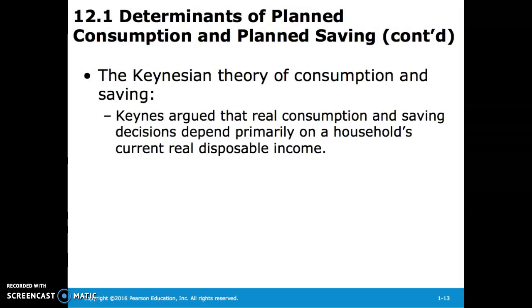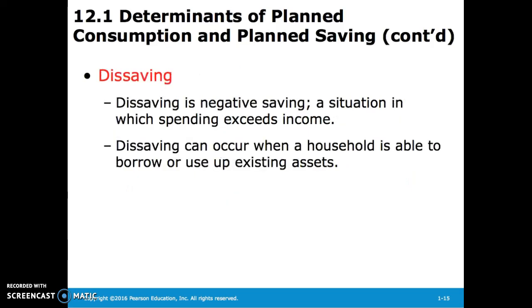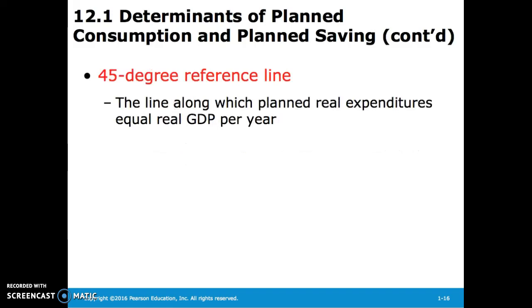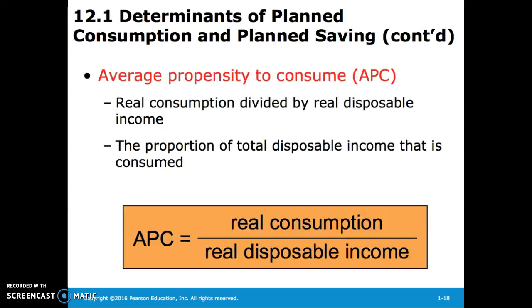Keynes suggested that consumption and savings decisions primarily depend on a household's current real disposable income. A consumption function is the relationship between the amount consumed and disposable income — it indicates how much people plan to consume at various levels of disposable income. Dis-saving is a situation in which spending exceeds income and can occur when a household is able to borrow or use up existing assets. The 45-degree reference line is the line along which planned real expenditures equal real GDP per year. Autonomous consumption is the part of consumption that is independent of the level of disposable income, and changes in autonomous consumption shift the consumption function.